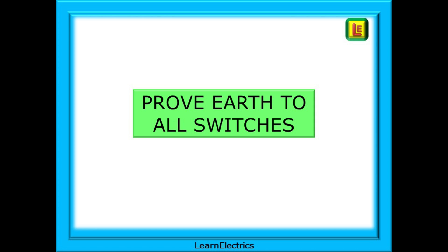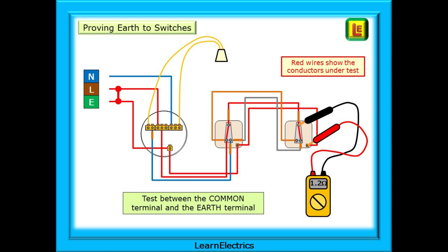We should prove that the earth or CPC conductor is continuous through the circuit to both switches. We may not need the earth today but it may be required in the future, so we need to check. Move to the furthest switch and low ohms test between the earth terminal and the common terminal of the switch. A low ohms reading should be returned showing that the CPC is continuous back to the consumer unit.